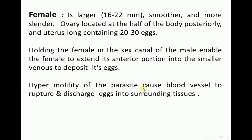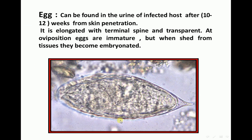Hypermotility of the parasite causes blood vessels to rupture and discharge eggs into surrounding tissues. Eggs of Schistosoma hematobium can be found in the urine of the infected host after 10 to 12 weeks from skin penetration by cercaria. The eggs are large, elongated, have a terminal spine, and are transparent. At the time of oviposition the eggs are immature, but when shed from tissues they become embryonated, containing the embryo — miracidia.